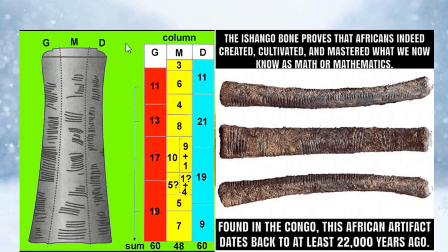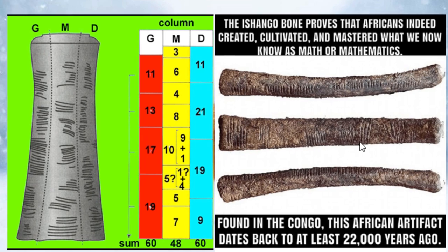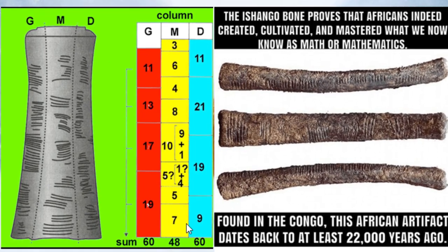So in mathematics we consider the Ishango bone that proves that Africans indeed created, cultivated, and mastered what we now know as mathematics. This was found in the Congo, an African artifact dating to 22,000 years ago. You can look at this mathematics in the columns here, and the sequence of the numbers here, 60, 48, 60.